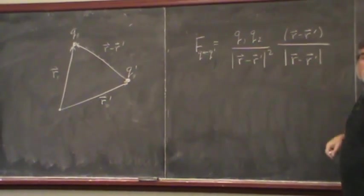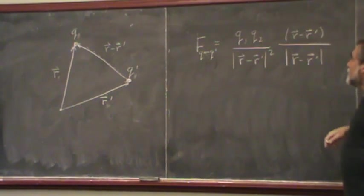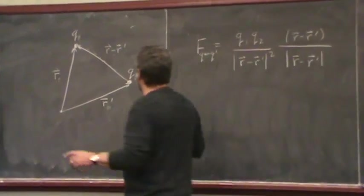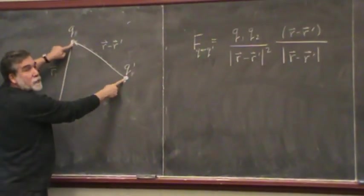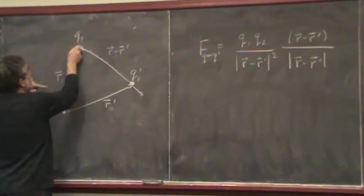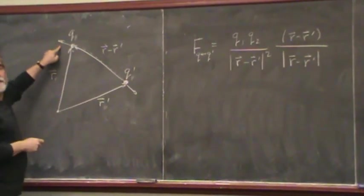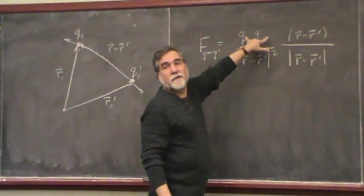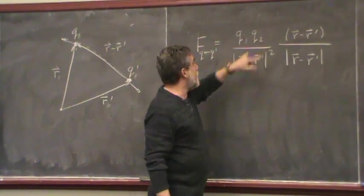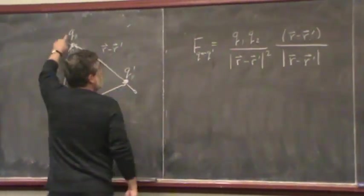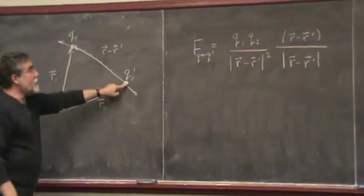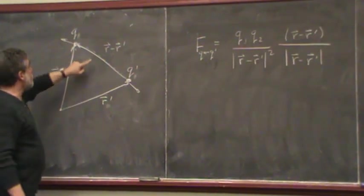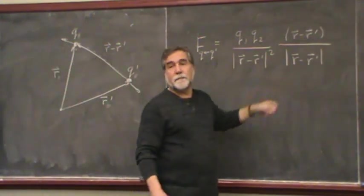Now I'm going to need this magnitude in here, so we actually want to write that out. Let me make sure that I've got the sign right here, because I can only do it by checking. If these two charges are both positive, then the forces will be repulsive, so the force is going to point in that direction. If they're both positive, then q1 times q2 is positive, and the force that acts on q is going to point in the direction from r prime to r — from q prime to q. It points in the same direction. So that's my unit vector in the proper direction.